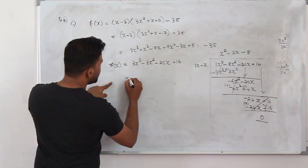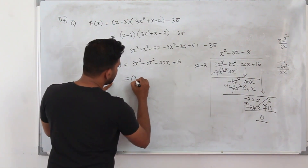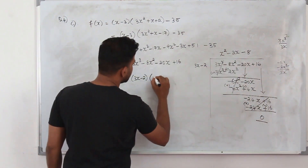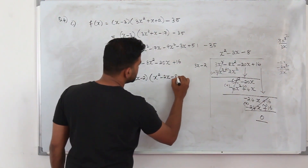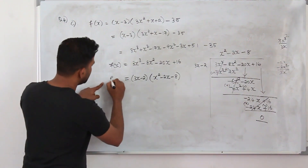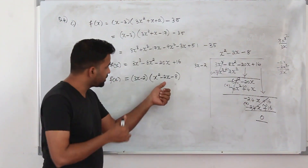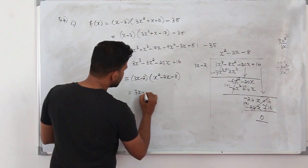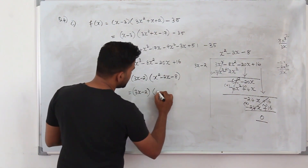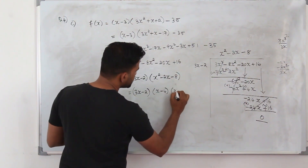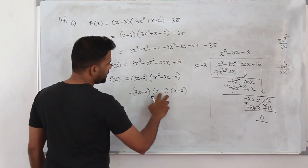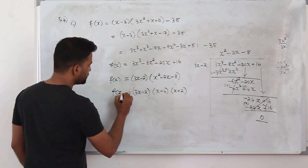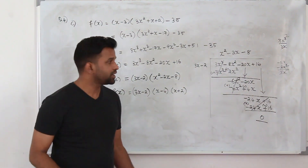So we can write f(x) as (3x minus 2) multiplied by the quotient (x² minus 2x minus 8). But don't stop there — you need to factorize the quadratic too. Factorizing x² minus 2x minus 8 gives (x minus 4)(x plus 2). So f(x) fully factorized is (3x minus 2)(x minus 4)(x plus 2). That is your final answer.